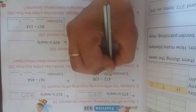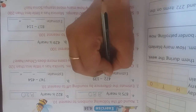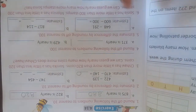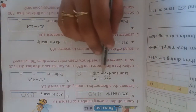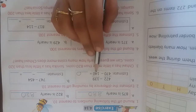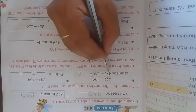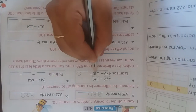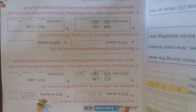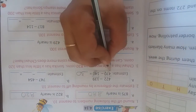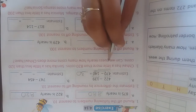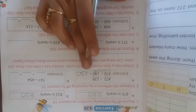Let's solve it now. Our estimated expression is 470 minus 140. In the ones place: 0 minus 0 is 0. In the tens place: 7 minus 4 is 3. In the hundreds place: 4 minus 1 is 3. So the answer will be 330.